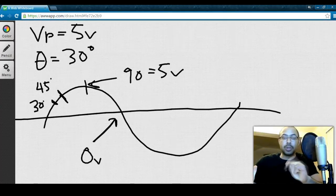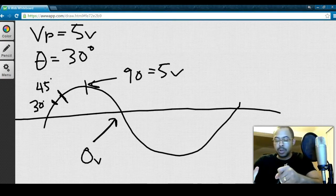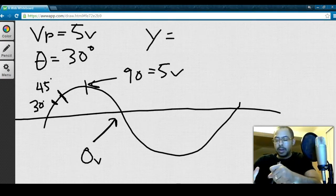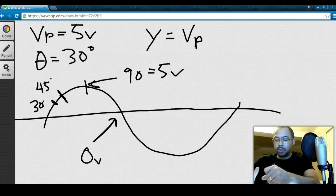Your equation is this. Your instantaneous voltage, represented by Y, is going to equal voltage peak, or peak voltage, which is 5 volts, multiplied by the sine of theta.